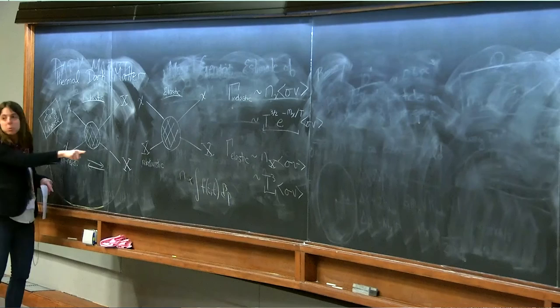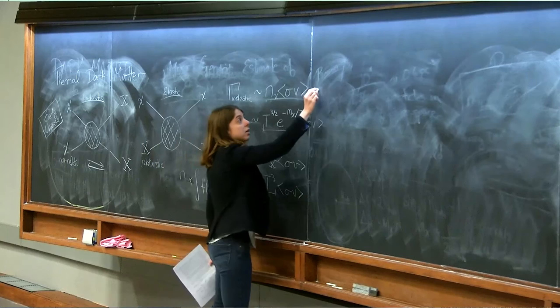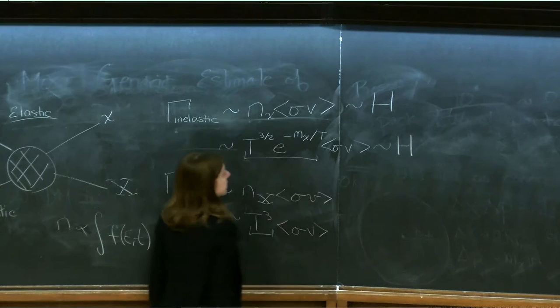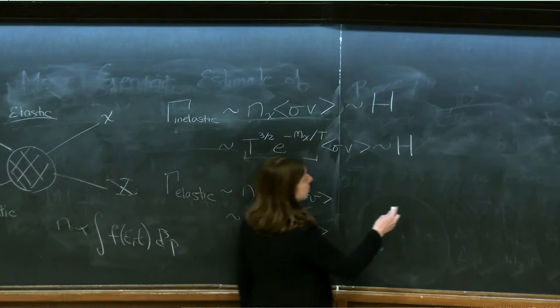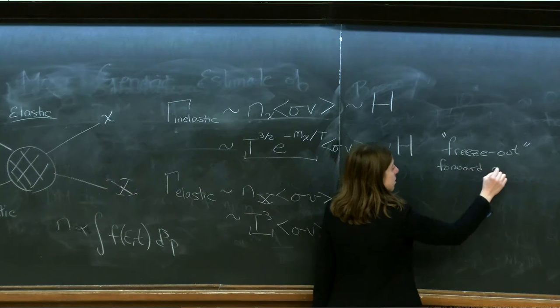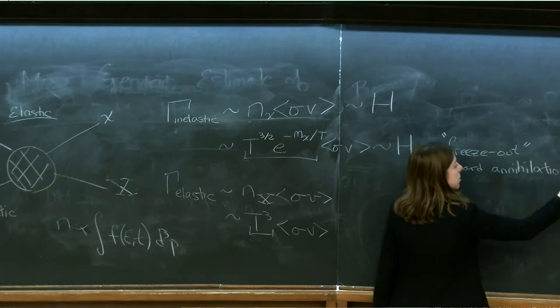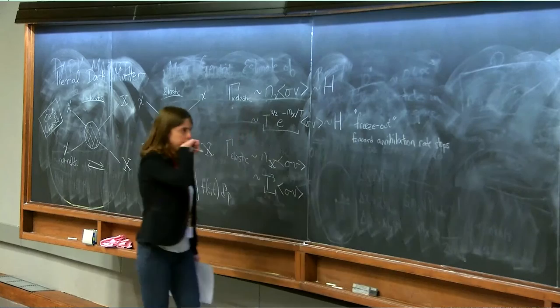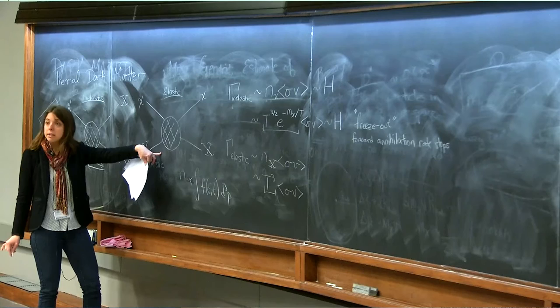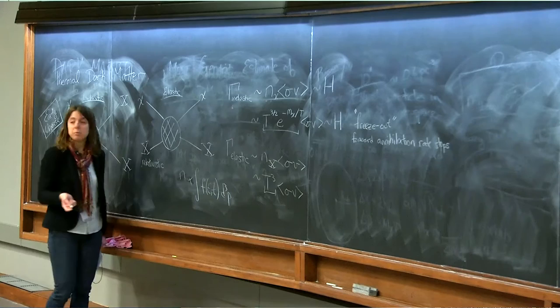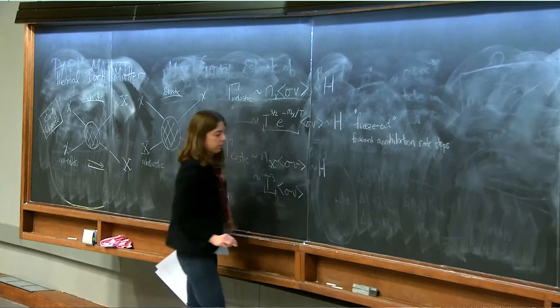What we want to compare is this rate to the Hubble rate H. The temperature at which that occurs is called the freeze-out temperature — it's essentially the time at which the forward annihilation rate stops. When we look at the elastic scattering case, it will shut off at the same point in time as well when its rate becomes comparable to the Hubble rate, for the same exact reason as the inelastic case.